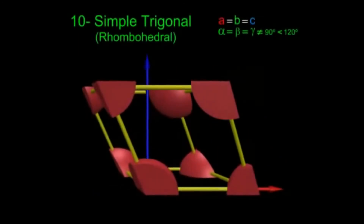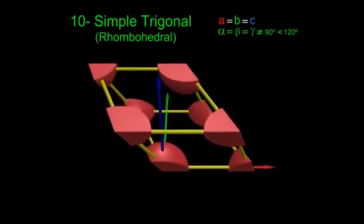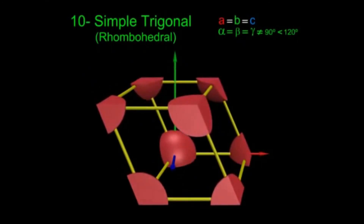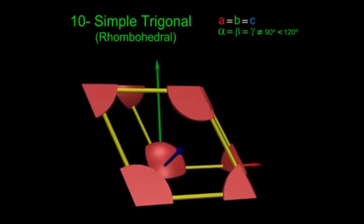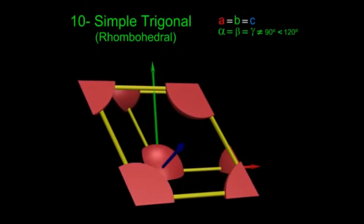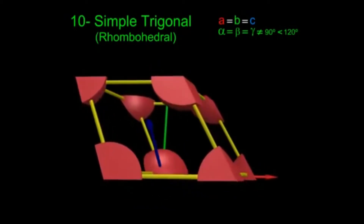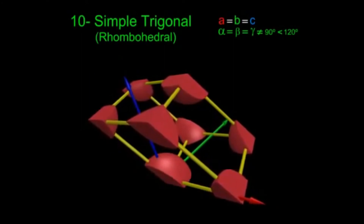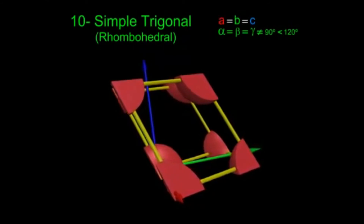The tenth Bravais lattice is the simple trigonal cell, also called the rhombohedral cell. Here all sides are equal — a = b = c — just like simple cubic, but the angles are equal to each other yet not equal to 90°: alpha = beta = gamma ≠ 90°, and all angles are less than 120°. It is a primitive cell with particles only at the corners.